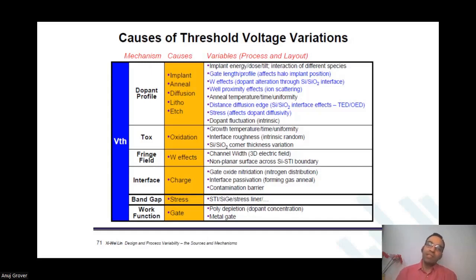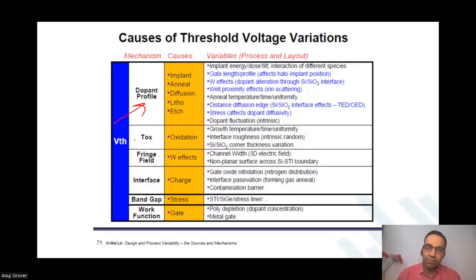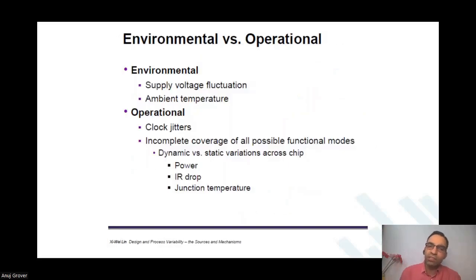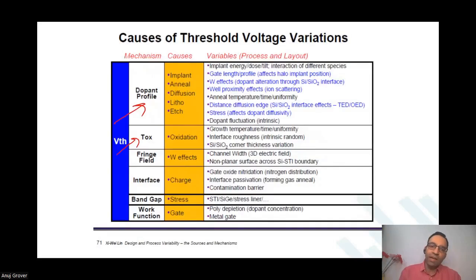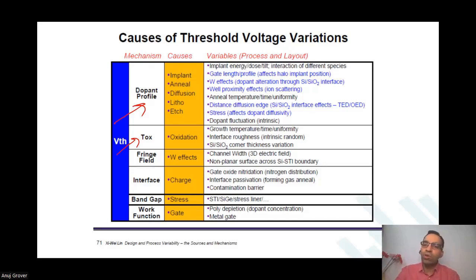In terms of VT variations, there are multiple reasons why VT variations could happen. We talked about dopants, we talked about interface roughness, we talked about line edge roughness and so on. But there are other variations also — there could be band gap variation, there could be work function variation. All of that could be because of different reasons — proximity effects. Some are systematic, some are non-systematic, and they all have to be modeled into your device equations so that when you run Monte Carlo simulations, you can see the impact of all of them collectively on your circuit behavior.